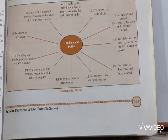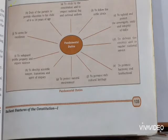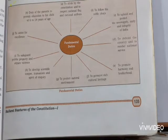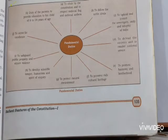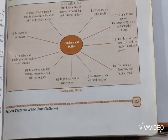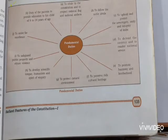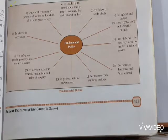Duty (j) is to strive towards excellence in all spheres of individual and collective activity. Duty (k) is the duty of a parent or guardian to provide opportunities for education to his or her child between the age of 6 and 14. This last duty was added by the Constitutional Amendment 86th Act 2002, Article 21A — the right to education.